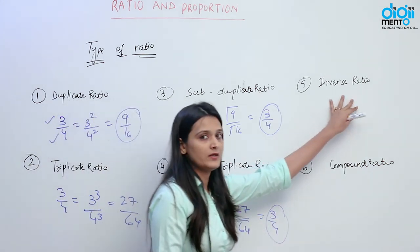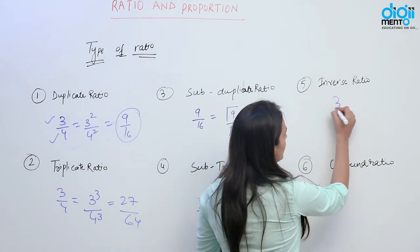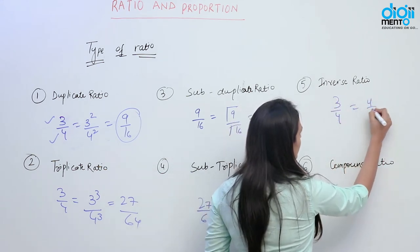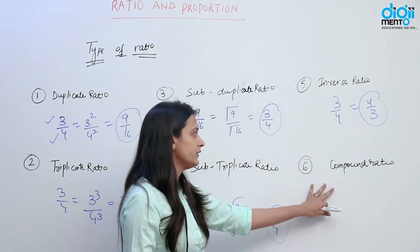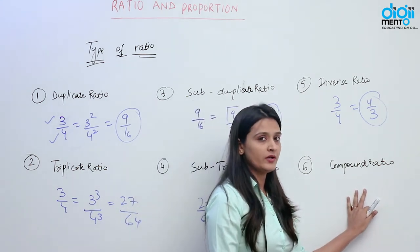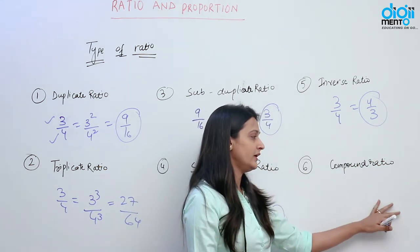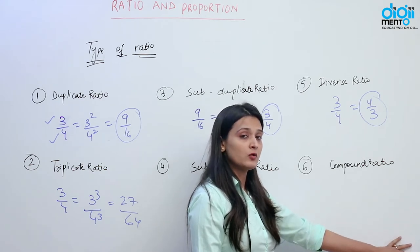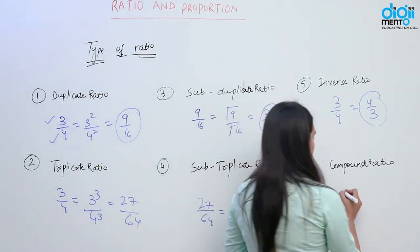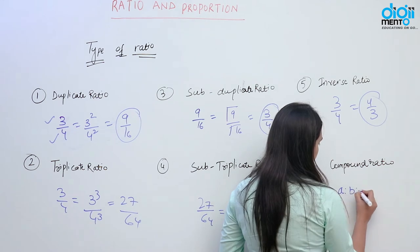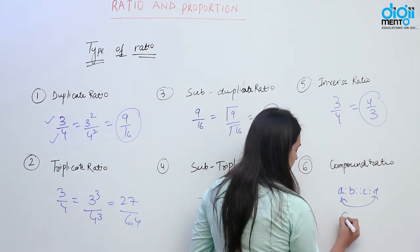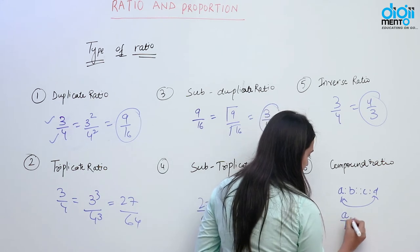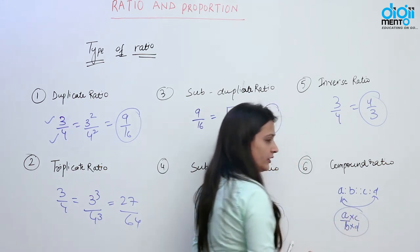Now, what is inverse ratio? Suppose if we have the number 3 by 4, that means 4 by 3 is the inverse ratio of 3 by 4. Now the last one is compound ratio. What is compound ratio? The product of the antecedents to the product of the consequents is known as compound ratio. Suppose if we have A ratio B ratio C ratio D, then compound ratio is A into C over B into D. This is known as compound ratio.